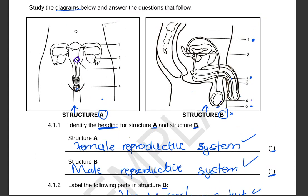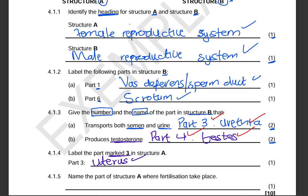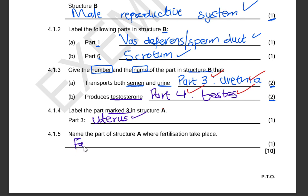Question 4.1.5 asks us to name the part of structure A where fertilization takes place, for one mark. Fertilization takes place in the fallopian tube, also called the oviduct. This is where the nucleus of the sperm fuses with the nucleus of the egg to form a zygote. So the answer is: fertilization takes place in the fallopian tube, or oviduct.